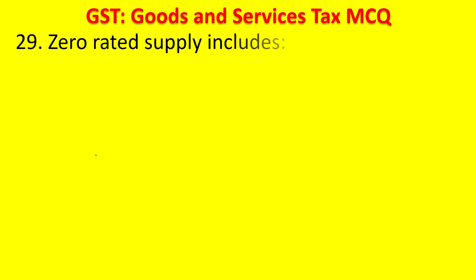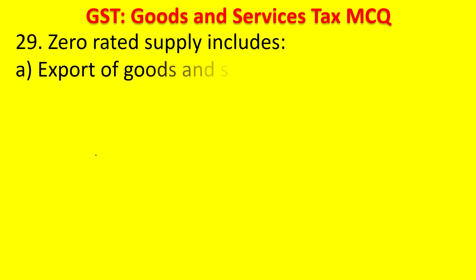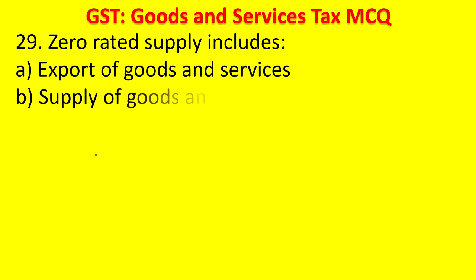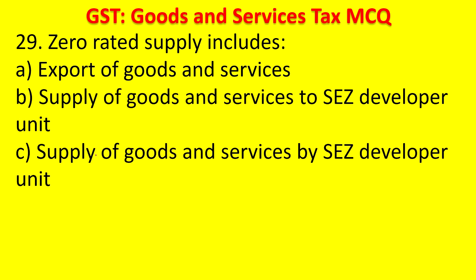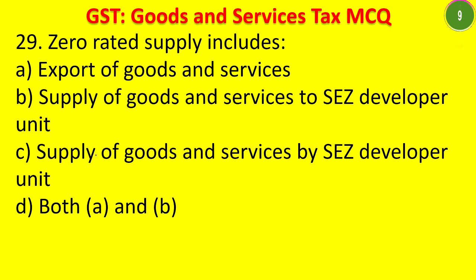Question 28: Zero-rated supply includes — A. export of goods and services, B. supply of goods and services to SEZ developer and unit, C. supply of goods and services by SEZ developer and unit, D. both A and B. The answer is both supply to and by the SEZ developer and unit — they are zero-rated supply, meaning the tax rate will be zero.